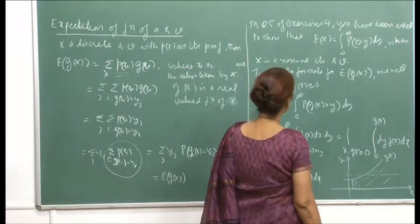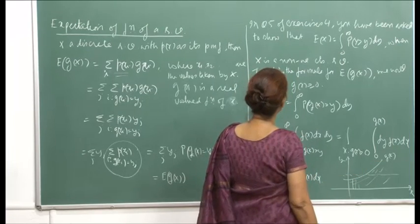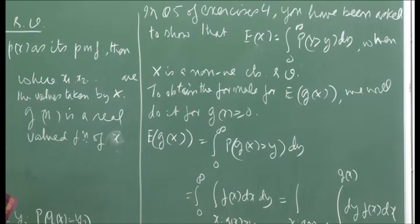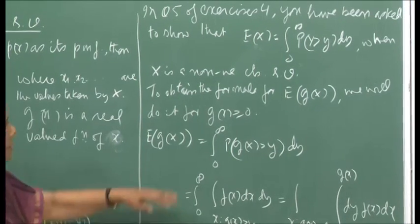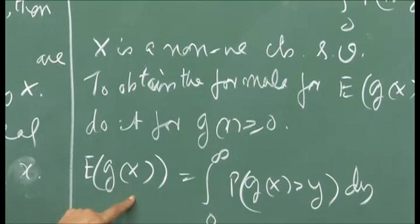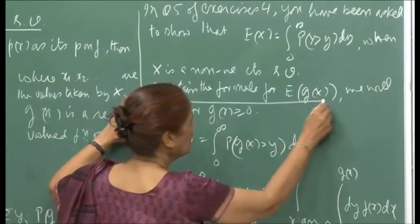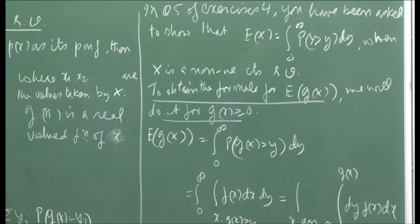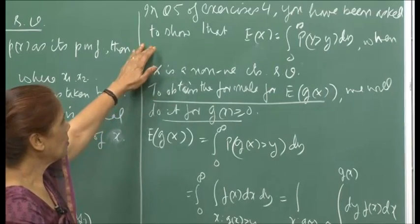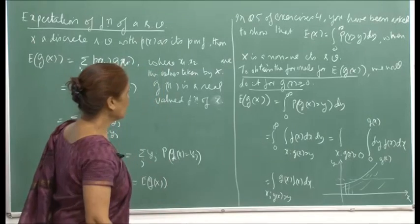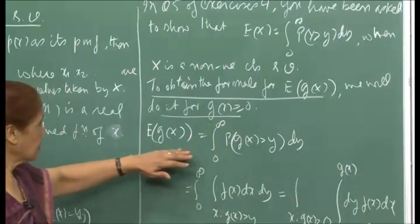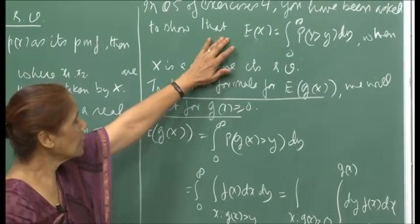In Question 5 of Exercise 4, you are asked to show that E[x] = ∫₀^∞ P(x > y) dy when x is a non-negative continuous random variable. I will obtain the formula for E[g(x)] when g(x) is non-negative. For the general case where g(x) can take both positive and negative values, once you understand this approach, you will be able to handle that as well.